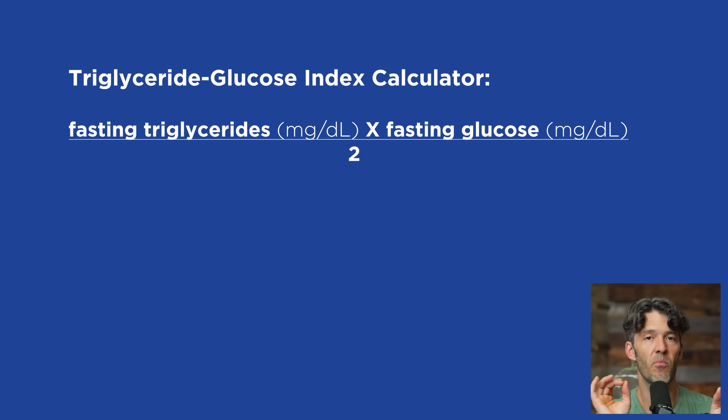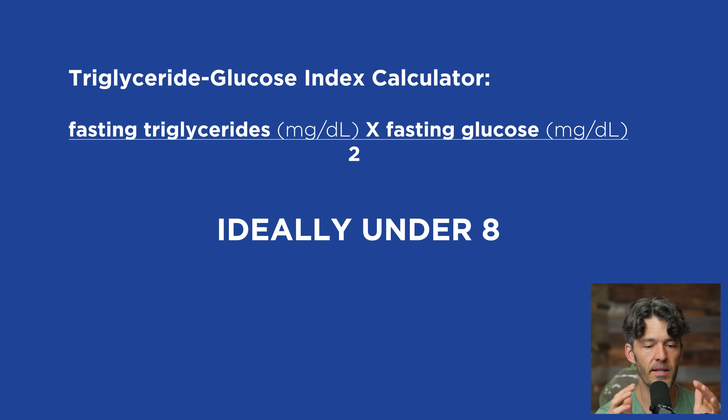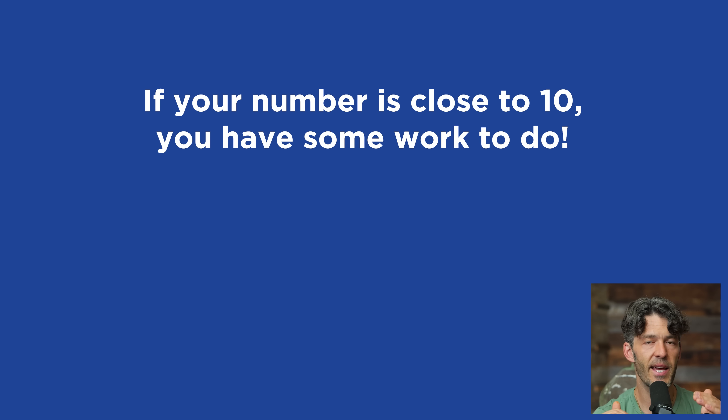The logarithmic calculation of your fasted triglyceride level multiplied by your blood glucose level, divided by two, will give you a number. For most people, that number is going to be around 7.9 or eight. If that number creeps up closer to 10, you have some work to do. The easiest way to lower this number into a more optimal range is to lower your triglycerides, which is one of the easiest biomarkers to modify with a low-carb diet and with exercise.